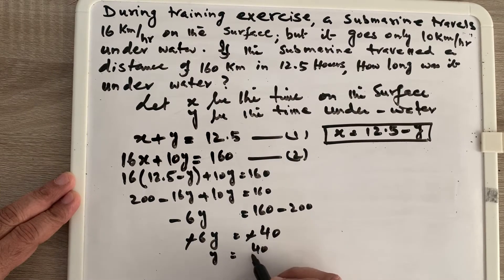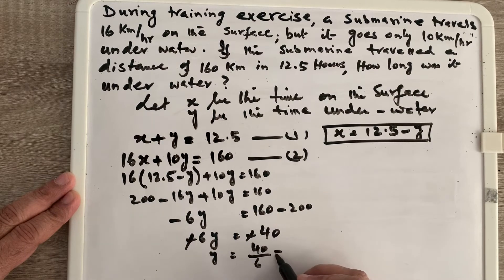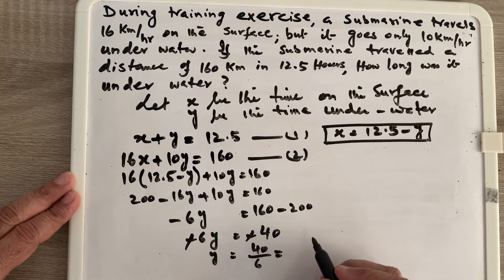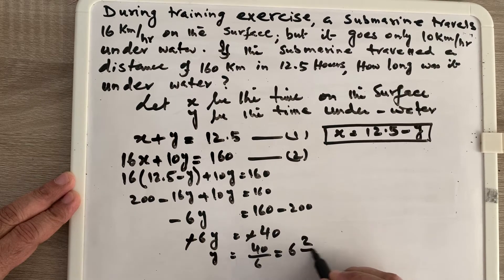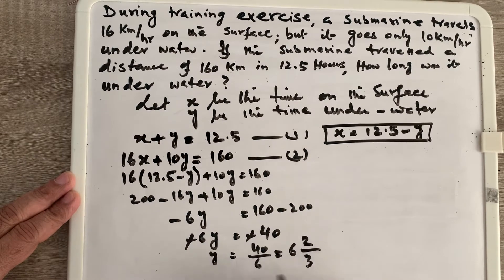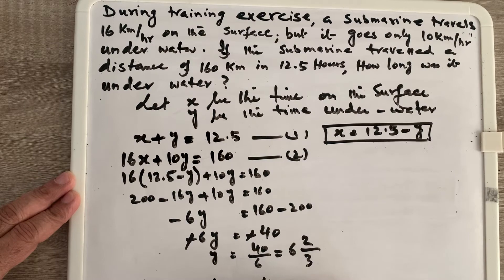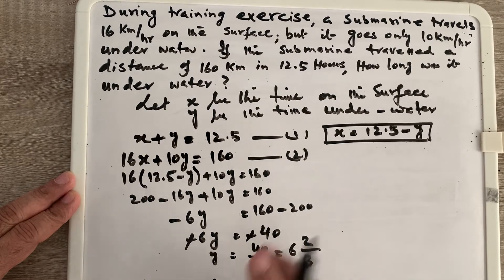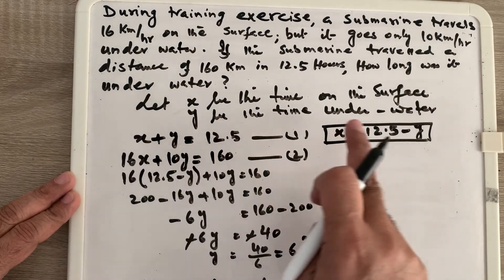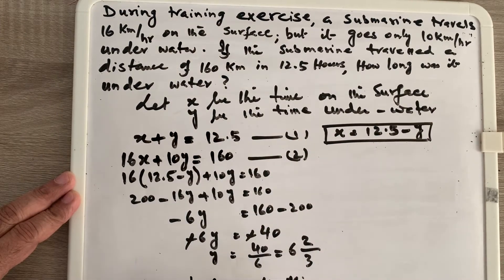The negatives cancel, so y = 40 ÷ 6. As a mixed fraction that is 6 and two-thirds, which converts to 6 hours and 40 minutes. Since y is the time underwater, the answer is 6 hours and 40 minutes.